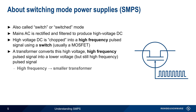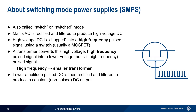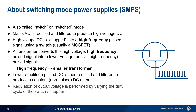Because the signal is high frequency, we can use a smaller transformer. This lower amplitude pulse signal is then rectified and filtered to produce a constant, non-pulsed DC output. The output voltage is controlled or regulated by varying the duty cycle of the switch or chopper.